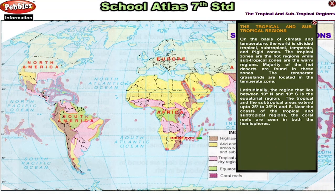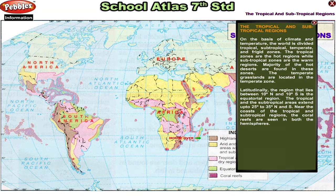On the basis of climate and temperature, the world is divided into tropical, subtropical, temperate and frigid zones. The tropical zones are the hot regions while subtropical zones are the warm regions. Majority of the hot deserts are found in these zones. The temperate grasslands are located in the temperate zone. Latitudinally, the region that lies between 10 degree north and 10 degree south is the equatorial region. The tropical and subtropical areas extend up to 25 to 35 degrees north and south.